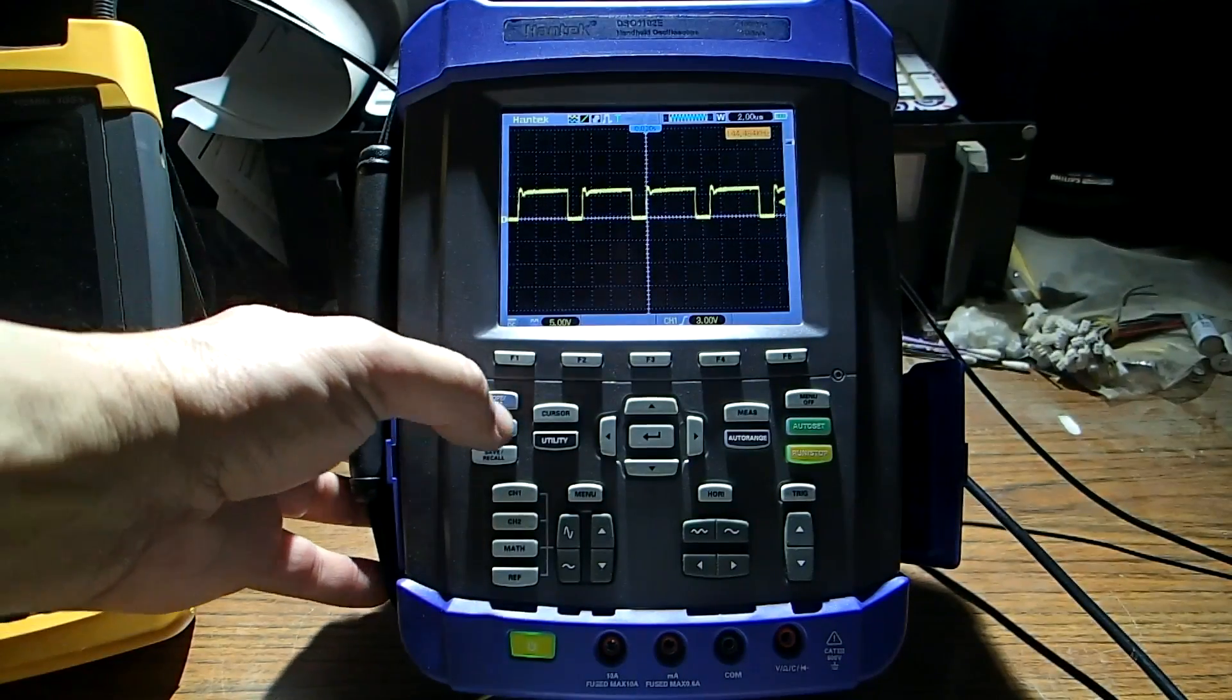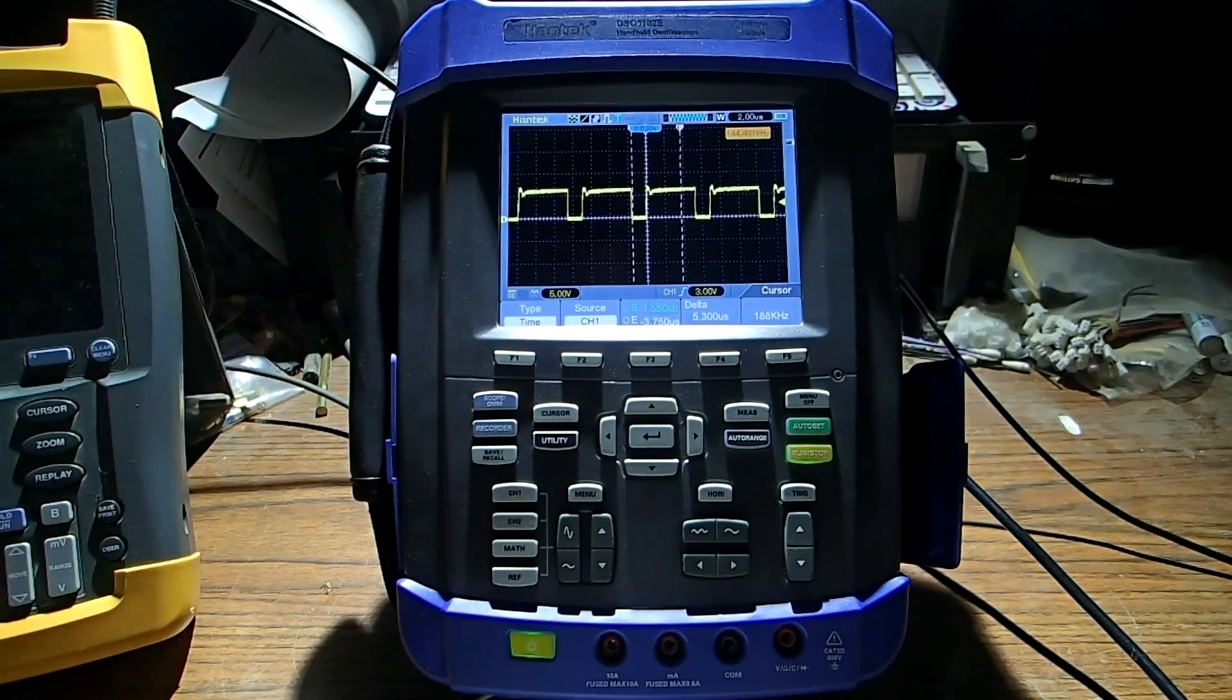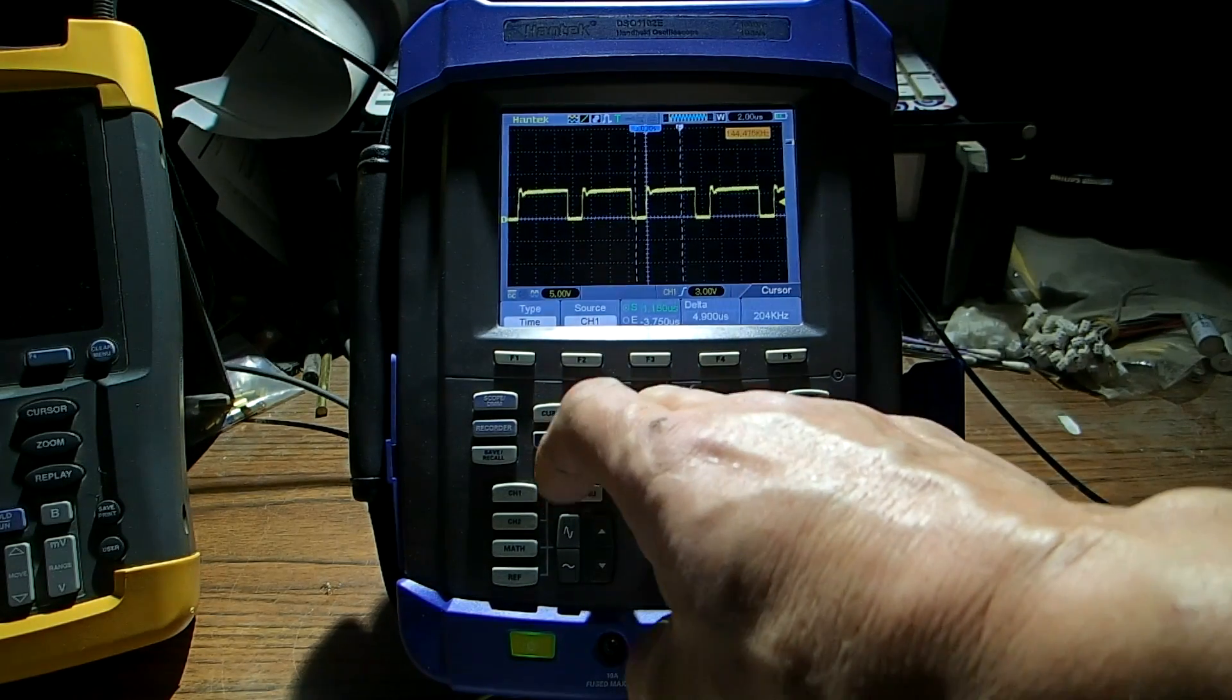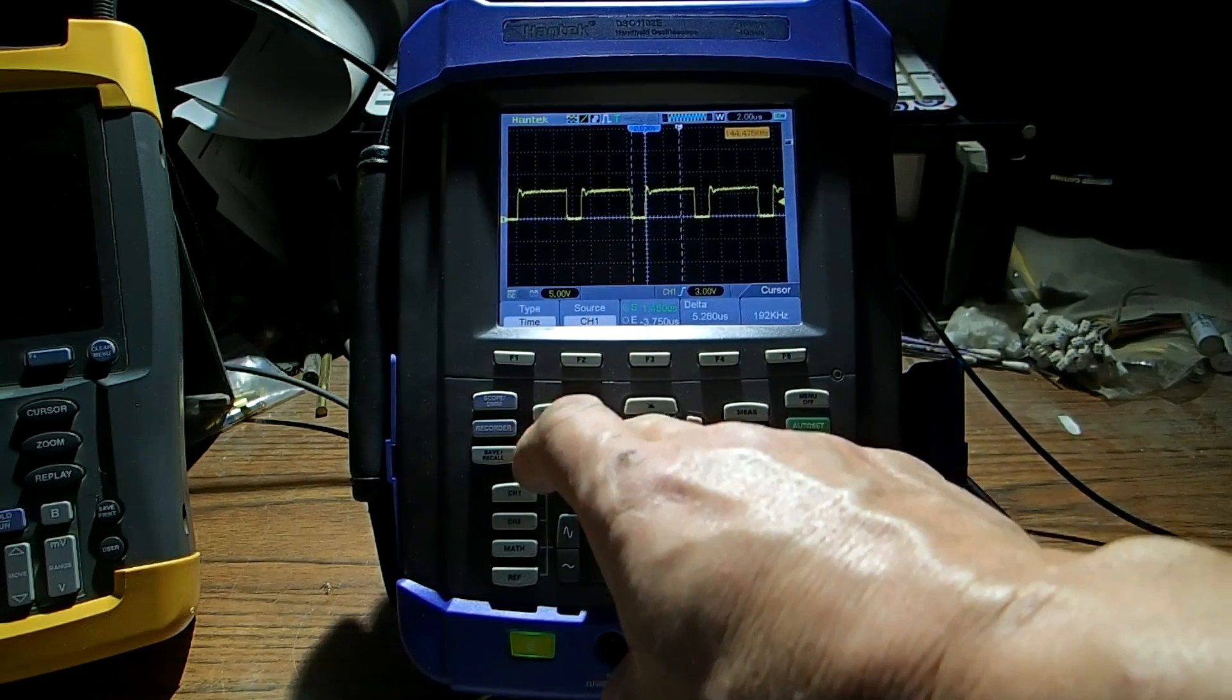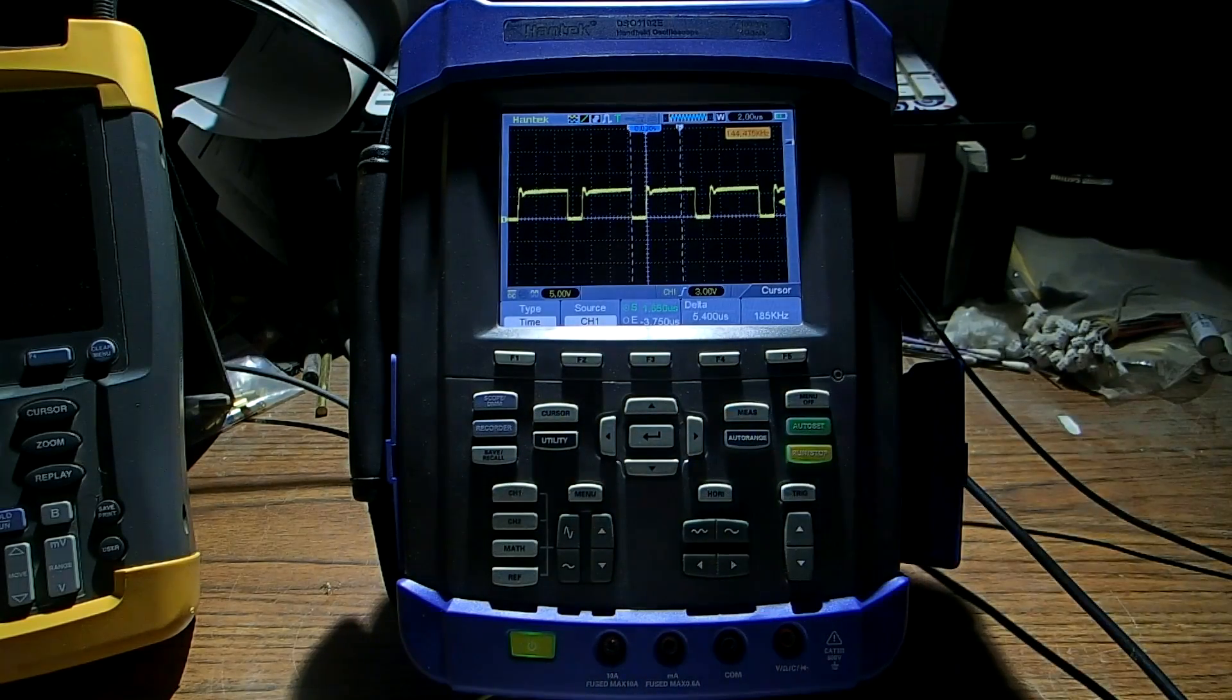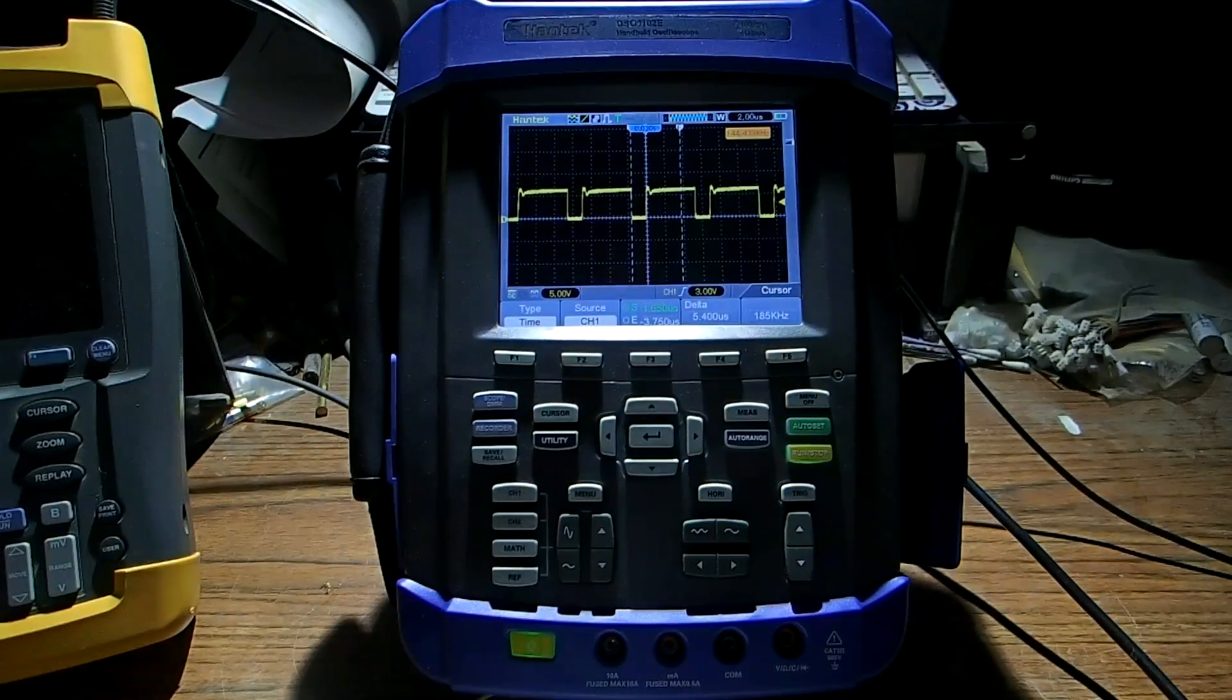It has a cursor function right here. If you press this and then select the type and time, we can now measure. I imagine you can move these with these left and right buttons. And they work. And so you can see where your measurement you can start and a little handy feature to have that.